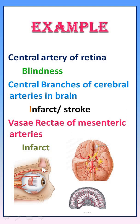Examples of end arteries: the central artery of the retina — if any block in this, it leads to blindness. The central branch of cerebral arteries in the brain — if any block in this area, it leads to stroke or infarction. The arteries of the mesenteric region — if any block in this area, it leads to infarction.